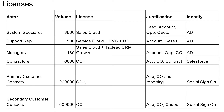For primary customers, there are 200K — I recommend going with CC Plus license. Justification is they need access to account customer objects and their own cases. Their identity would be social sign-on. For secondary customer contacts, which are 500K, I recommend going with Community Cloud license. Justification is getting access to account custom objects and their own cases. Their identity would also be social sign-on.